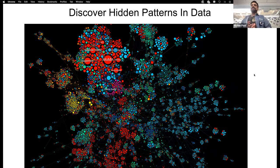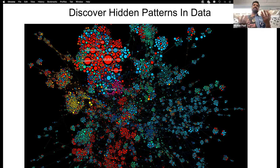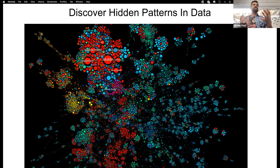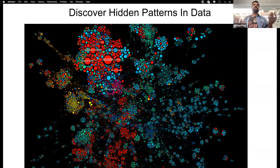A lot of things in life have hidden patterns. We maybe subconsciously understand them but not so much consciously, and that is exactly what we are trying to arrive at with deep learning — what are these hidden patterns, can we cluster them together, can we learn anything from this? There are amazing discoveries people have done recently finding these hidden patterns.